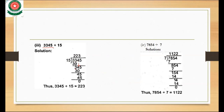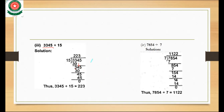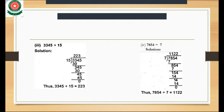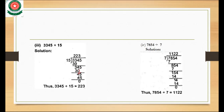15 times 3 gives 45, which is greater than 34, so we multiply 15 times 2 again which gives 30. Subtracting: 4 minus 0 is 4 and 3 minus 3 is 0, so we get 4. We bring down the next digit 5.